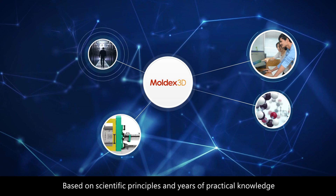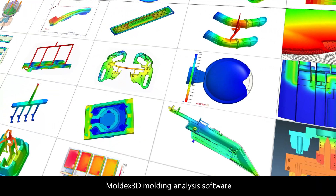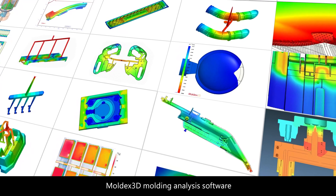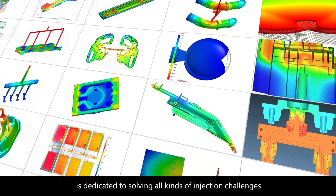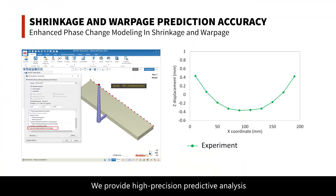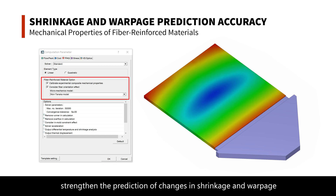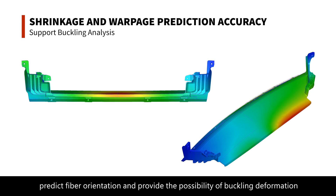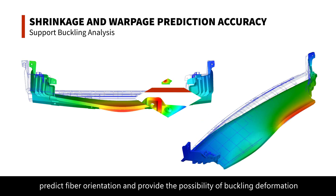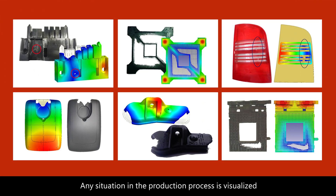Based on scientific principles and years of practical knowledge, Moldex 3D Molding Analysis software is dedicated to solving all kinds of injection challenges. We provide high-precision predictive analysis, strengthen the prediction of changes in shrinkage and warpage, predict fiber orientation, and provide the possibility of buckling deformation. Any situation in the production process is visualized.